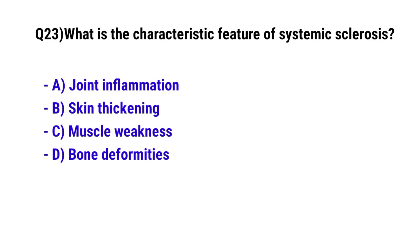Question number 23. What is the characteristic feature of systemic sclerosis? The correct option is A. Skin thickening.